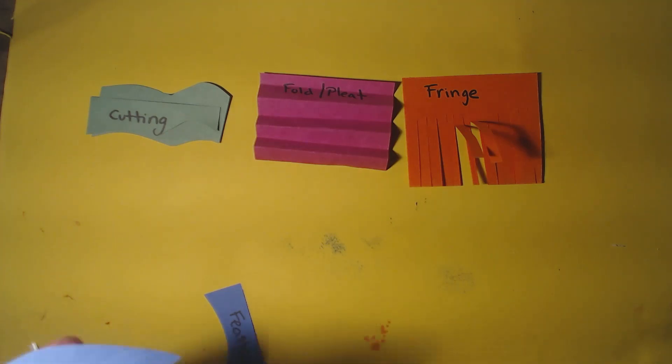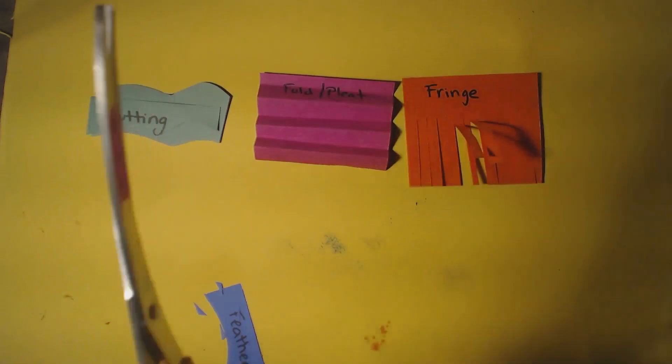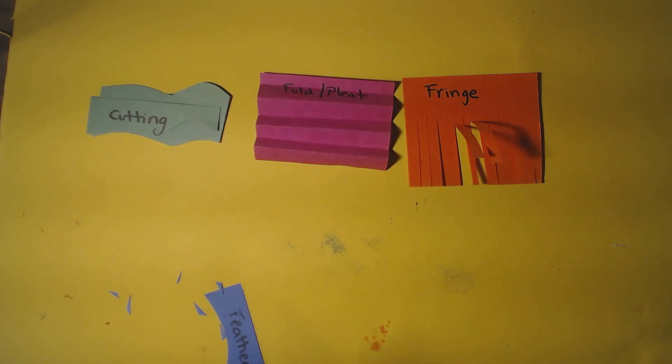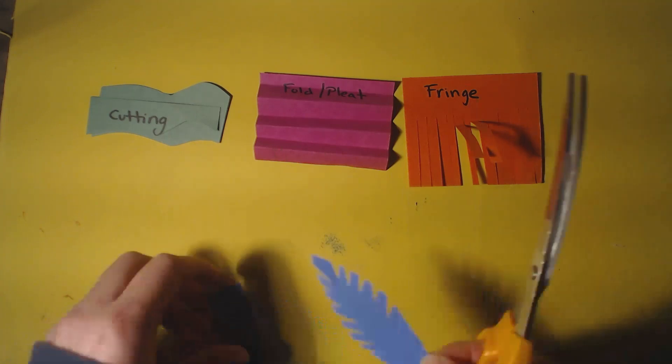You could always cut up little triangles too like this if you wanted to. Either one works. You can cut it like a fringe or you can cut tiny triangles. But again you're not cutting all the way across. Because if you do that then it's going to fall apart. And we don't want that to happen. So that is the feather technique. Okay so that one's feather.